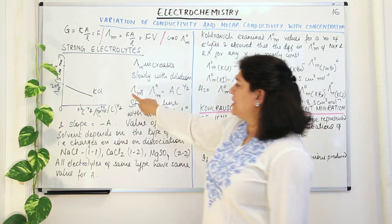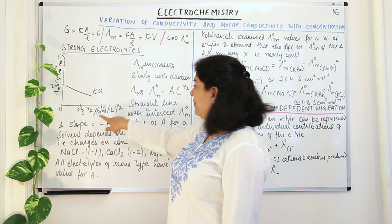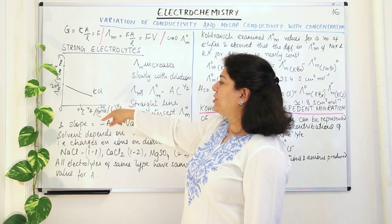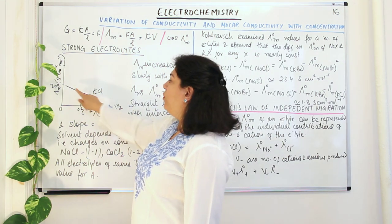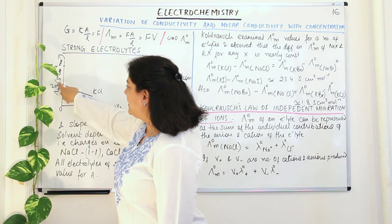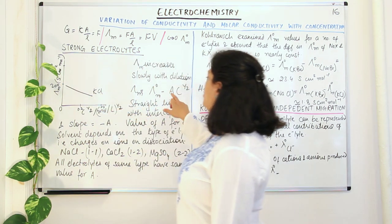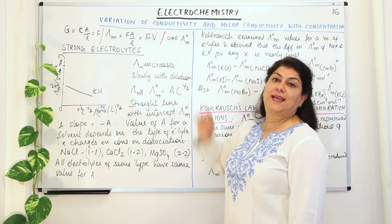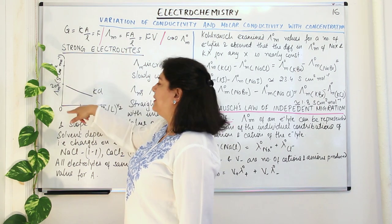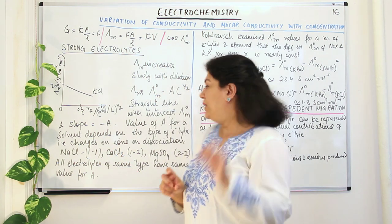When we plot a graph of c to the power half against molar conductivity for a strong electrolyte like KCl, we get a straight line. This straight line has an intercept — where it intercepts the axis is the limiting molar conductivity for KCl, and the slope is equal to minus A. So you are plotting a graph between molar conductivity and c to the power half, and where it intercepts, that point is the limiting molar conductivity.